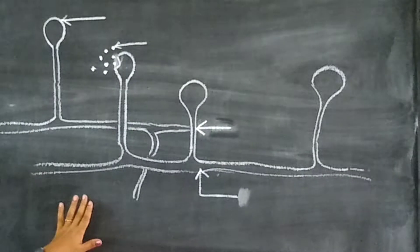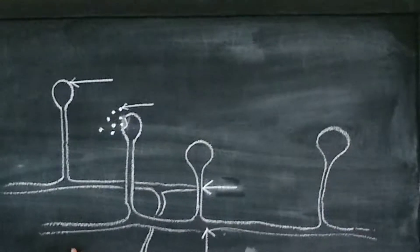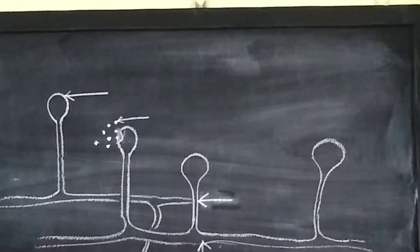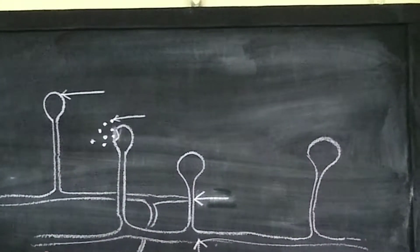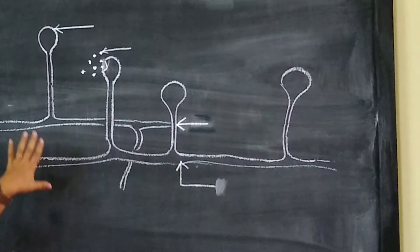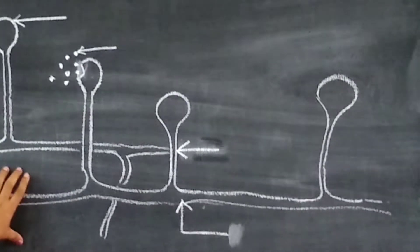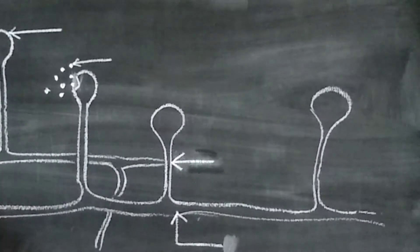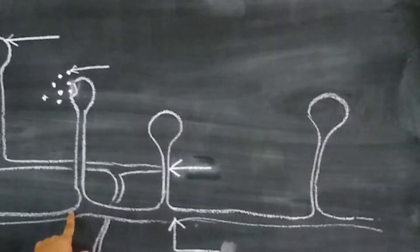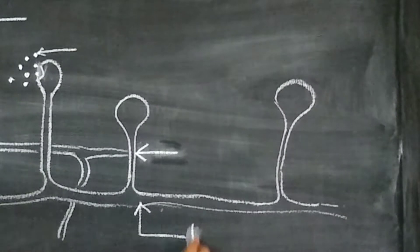When you observe bread mold under the microscope, we observe this. So this is the picture of bread mold. The fine threads that you see are the hyphae.